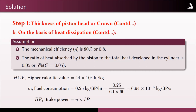The assumptions made are: mechanical efficiency η = 0.8 (80%), ratio of heat absorbed by piston to total heat developed c = 0.05 (5%), higher calorific value HCV = 44 × 10³ kJ/kg, specific fuel consumption m = 0.25 kg/BP/hr, which converts to 6.94 × 10⁻⁵ kg/BP/s.